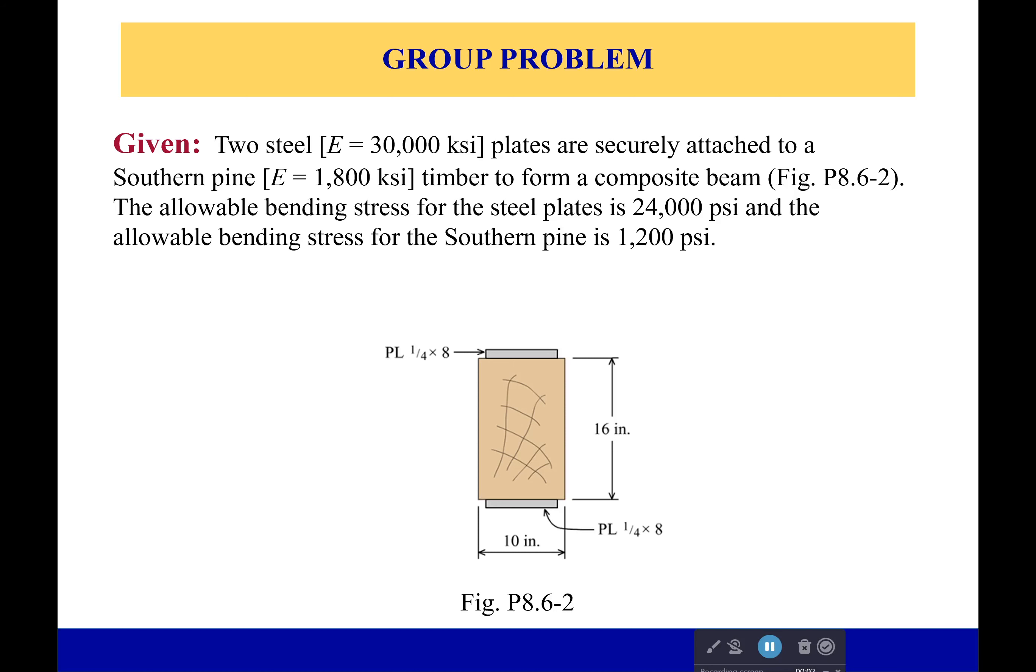Hi everyone, welcome back. So this time we have a very similar problem to our last one, but now instead of particle board and fiberglass we have steel and timber. So we have our two steel plates with a modular elasticity of 30,000 KSI securely attached to a southern pine timber to form a composite beam.